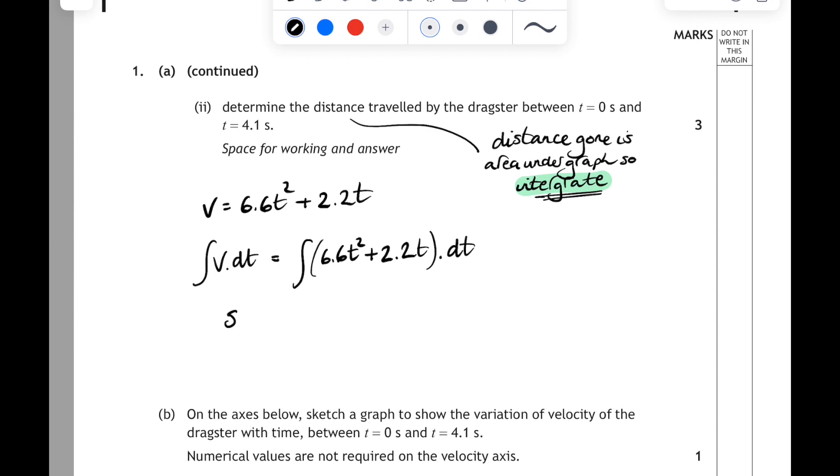And then perform the integration. Remember, when you integrate, you raise the power of t by 1 and divide by that power. So 6.6t cubed divided by 3 plus 2.2t squared divided by 2. And you should, of course, always add a constant of integration, but in this case, that constant will be 0, because when t equals 0, s equals 0.